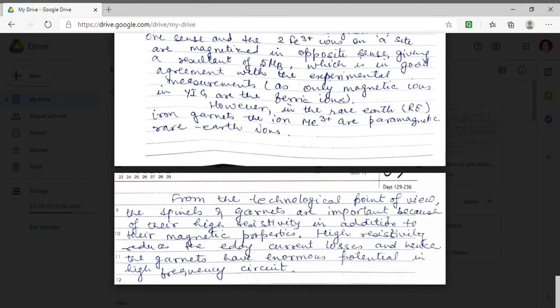These iron garnets and spinels they are very important from the technological point of view. These materials have good magnetic properties and their resistivity is also very high. This high resistivity reduces the eddy current losses. Hence they are very useful in high frequency circuits. So these garnets and spinels they have enormous technological applications.